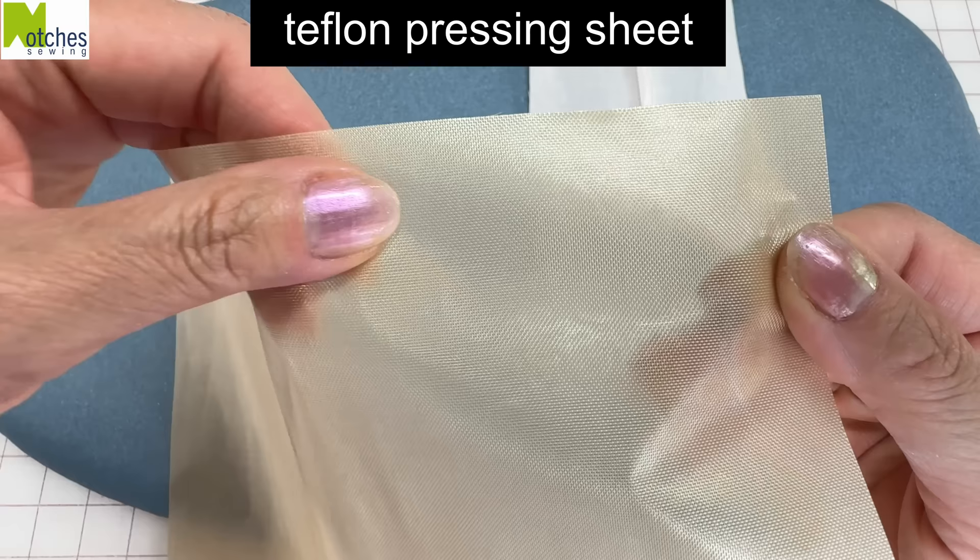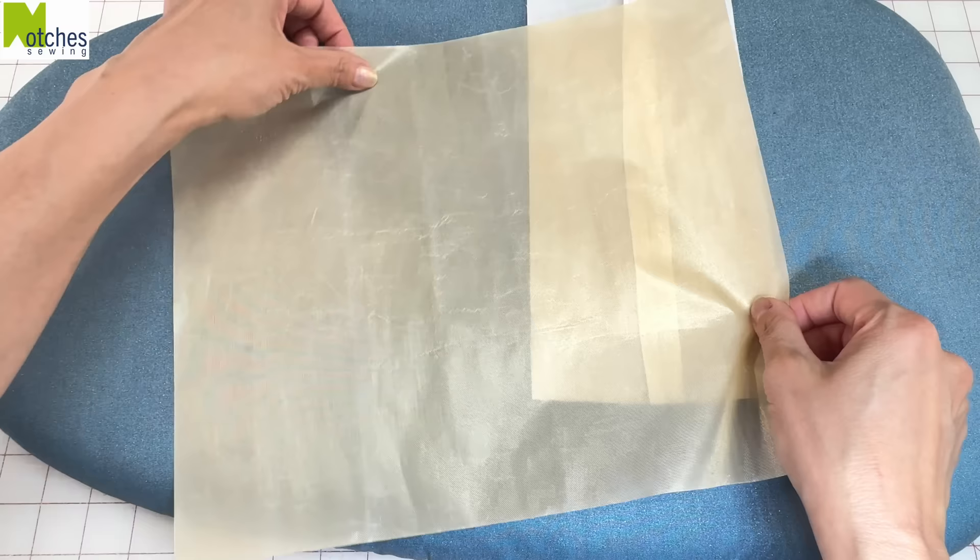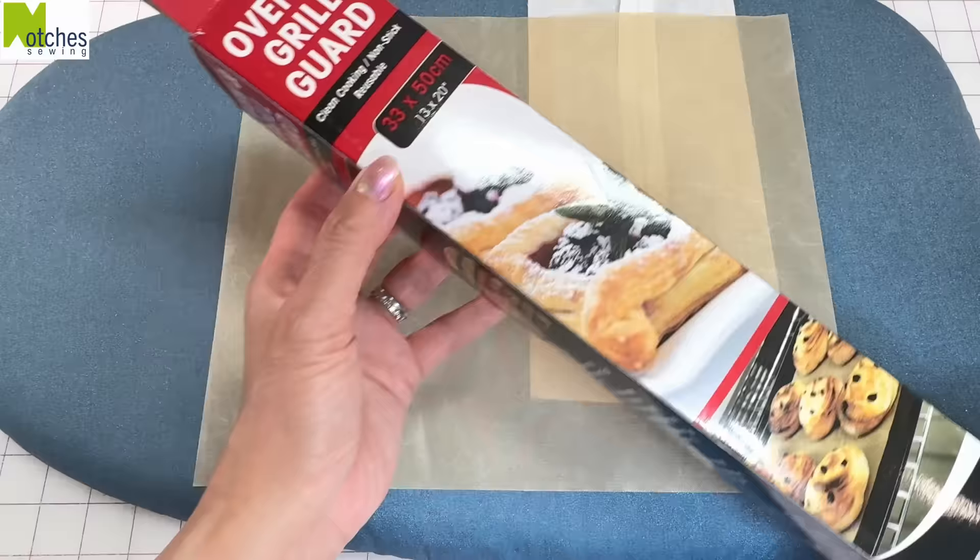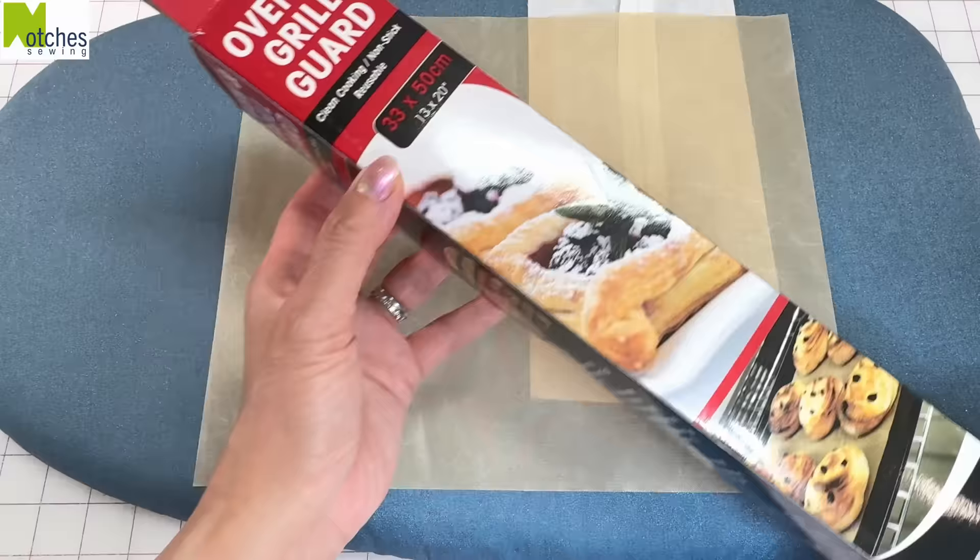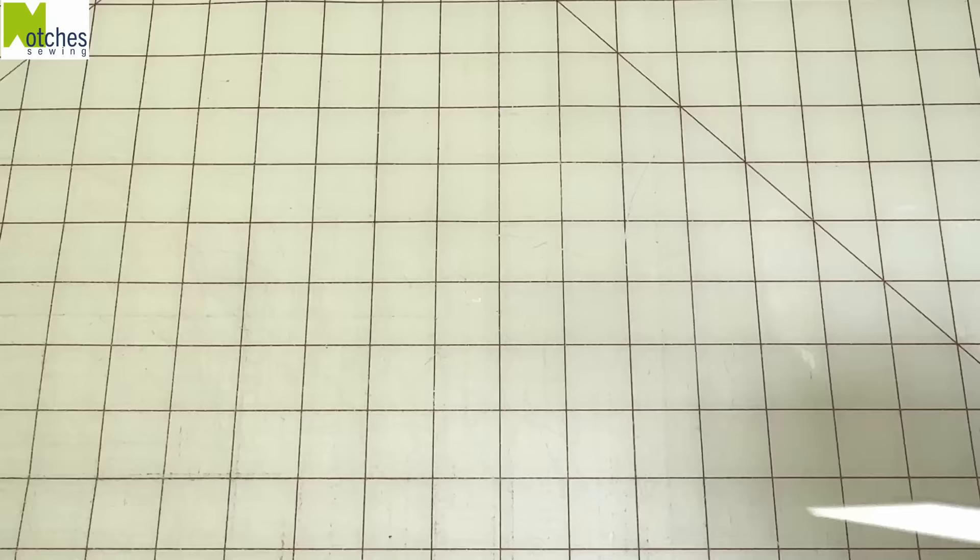This is my little Teflon pressing cloth. It's strong, non-stick and see-through. I use it as a general pressing cloth, but especially when I want to protect my iron and ironing board from fusible glues. If you have any of these oven and grill guard sheets, you can use these as well as they're literally the same thing, just in a much larger sheet.